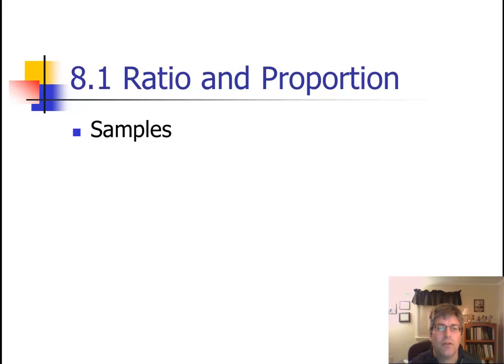So, some examples of ratios. Slope is a ratio. Slope is just rise over run. It's the fraction of the change in y over the change in x.